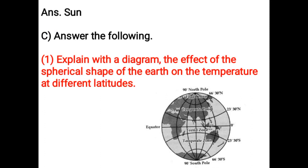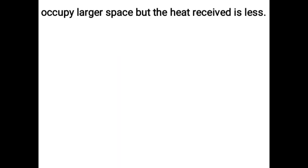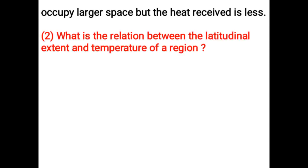Explain with a diagram the effect of the spherical shape of the Earth on the temperature at different latitudes. Due to the spherical shape of the Earth and the resultant curvature of the surface, sun rays occupy a larger or lesser area. Equatorial regions, which receive straight rays of the sun, occupy less space and the heat received is more. Polar regions receive slant rays of the sun, occupy larger space, but the heat received is less. What is the relation between the latitudinal extent and temperature of a region?